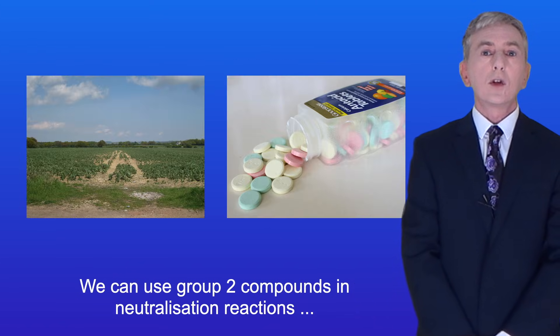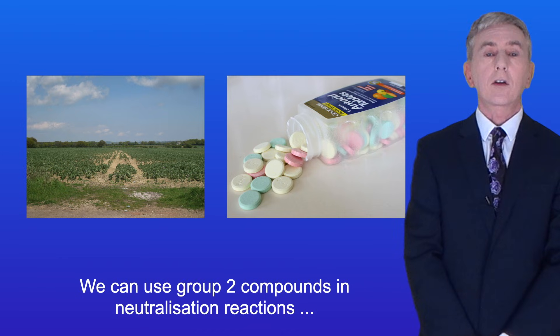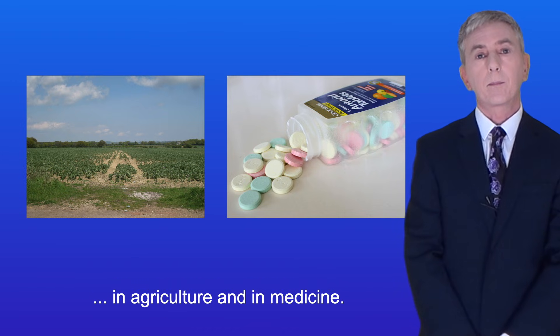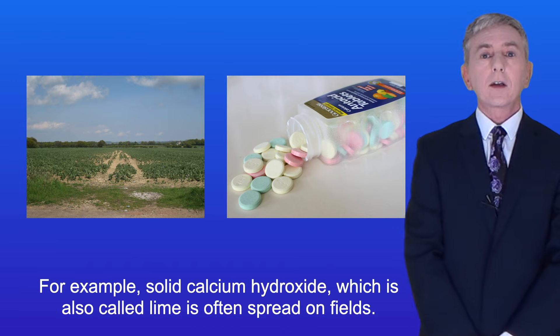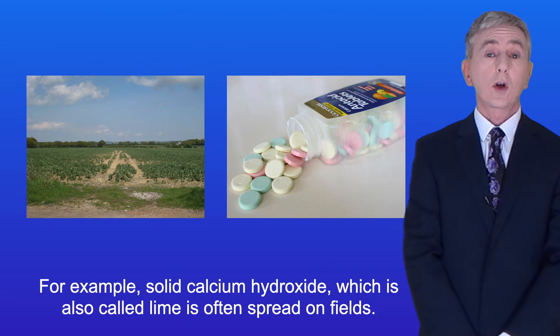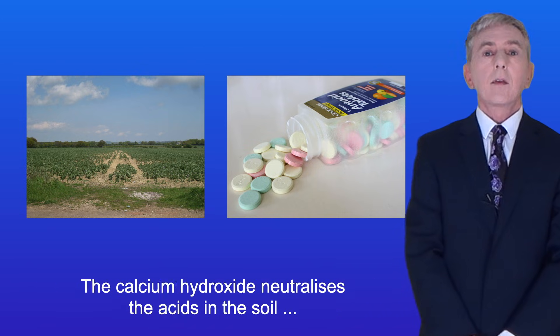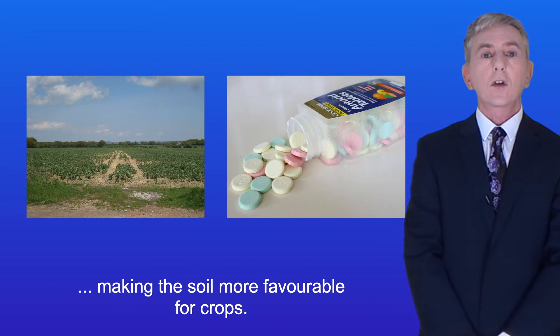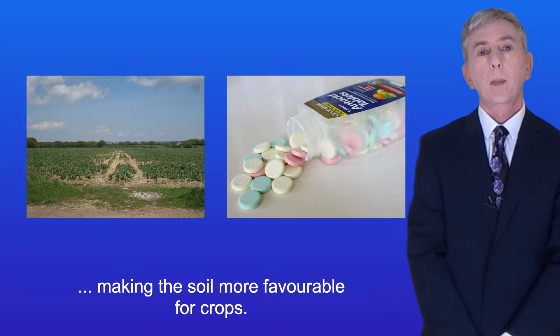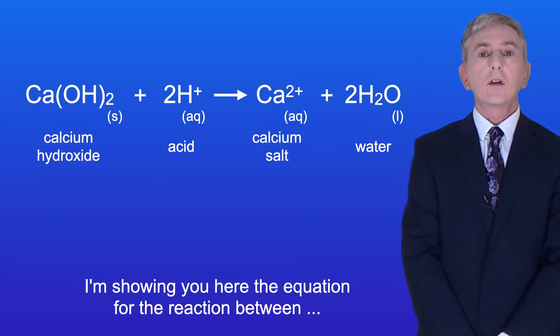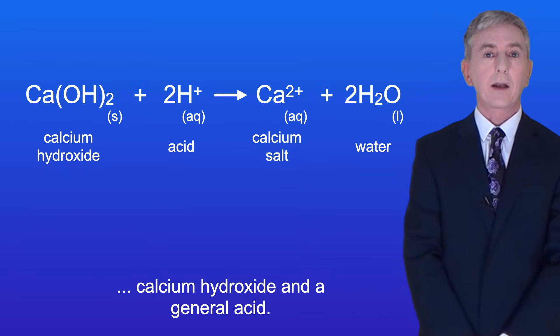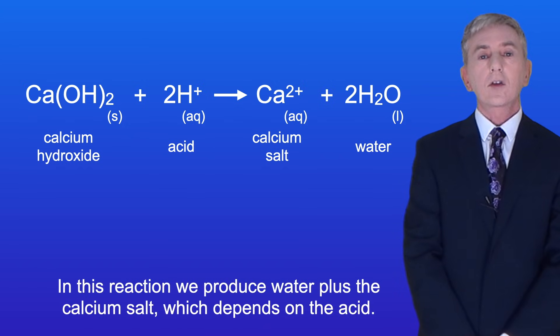Now we can use group 2 compounds in neutralization reactions in agriculture and in medicine. For example, solid calcium hydroxide, which is also called lime, is often spread on fields. The calcium hydroxide neutralizes the acids in the soil, making the soil more favorable for crops. I'm showing you here the equation for the reaction between calcium hydroxide and a general acid. In this reaction, we produce water plus the calcium salt, which depends on the acid.